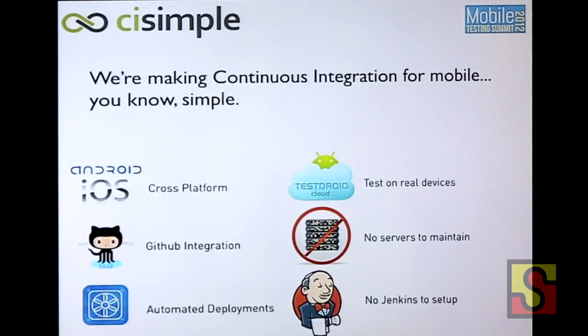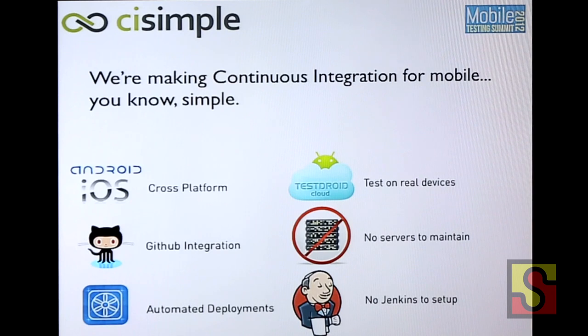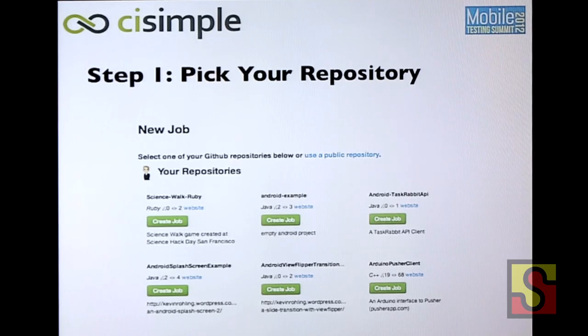We're CI Simple. We are continuous integration just specifically for mobile. We think there are a lot of very mobile-specific problems that need to be solved — cross-platform, iOS, Android, builds in the cloud. We integrate with GitHub to make your project setup really easy. And we just announced a partnership with a company called TestDroid. They do testing on physical devices, so we can automate your tests and have them run on physical devices up in the cloud.